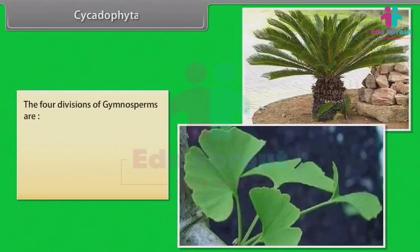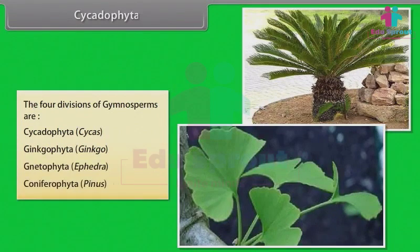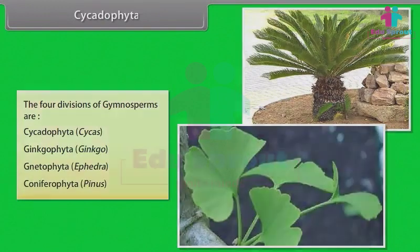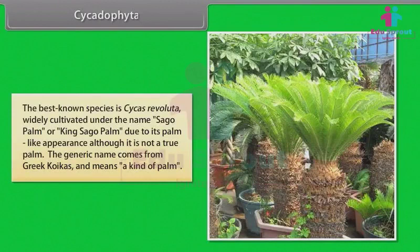The four divisions of Gymnosperms are: Cycadophyta (Cycas), Ginkgophyta (Ginkgo), Gnetophyta (Ephedra), and Coniferophyta (Pinus). The best known species is Cycas revoluta, widely cultivated under the name Sago Palm or King Sago Palm due to its palm-like appearance, although it is not a true palm. The generic name comes from Greek 'koix' and means a kind of palm.